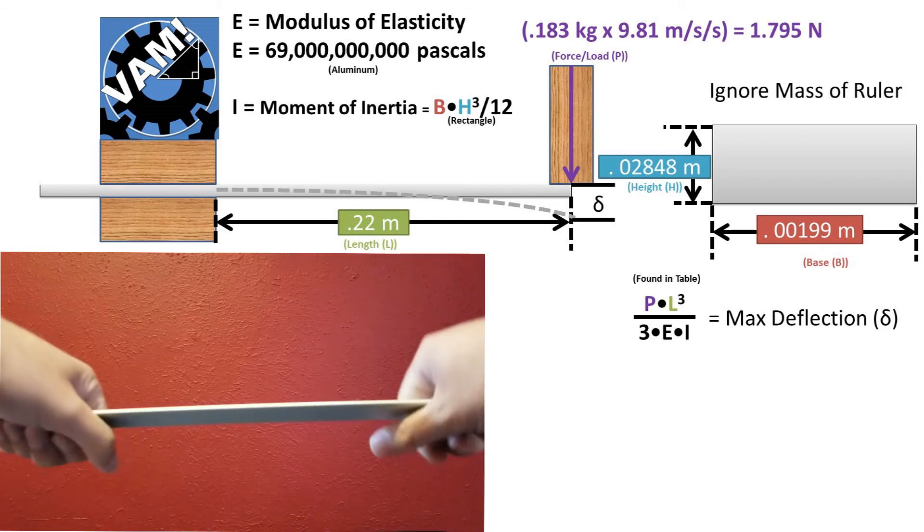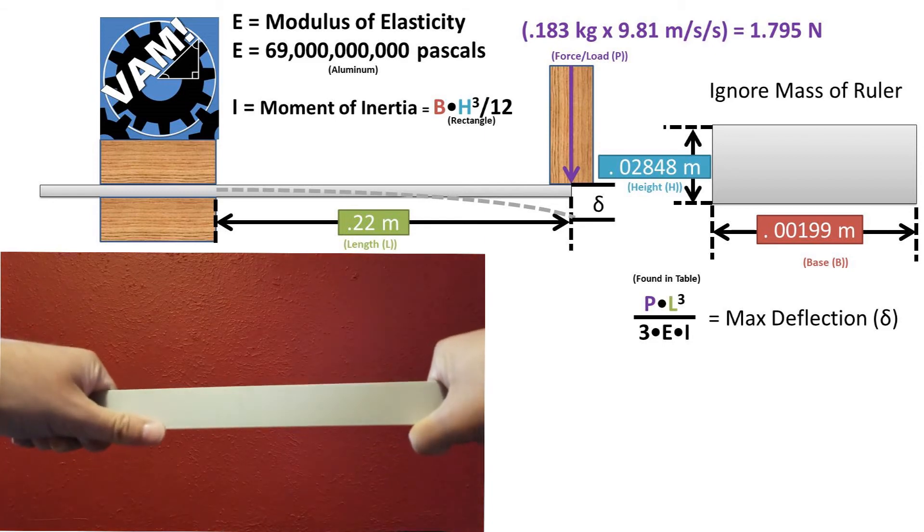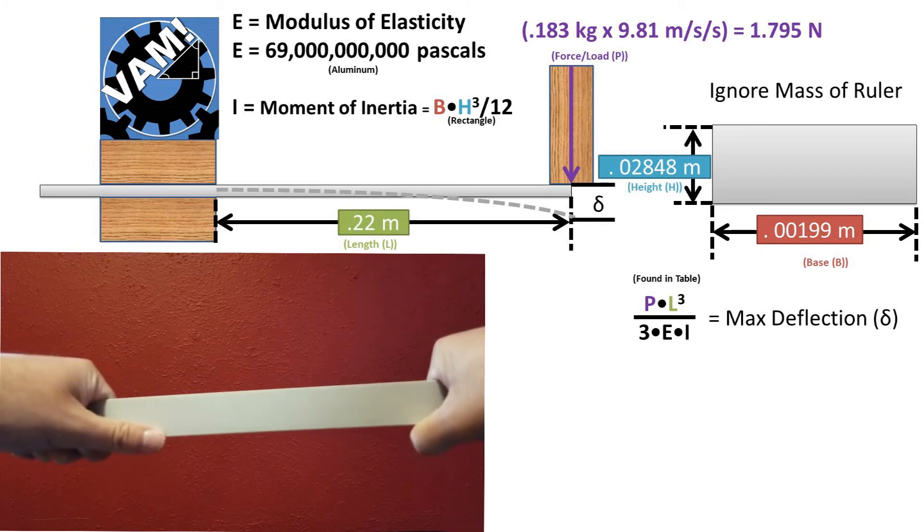Notice in this video how we can reorient the ruler and how the force is applied to cause the ruler to be more rigid. We have increased the planar moment of inertia by flipping the sides.